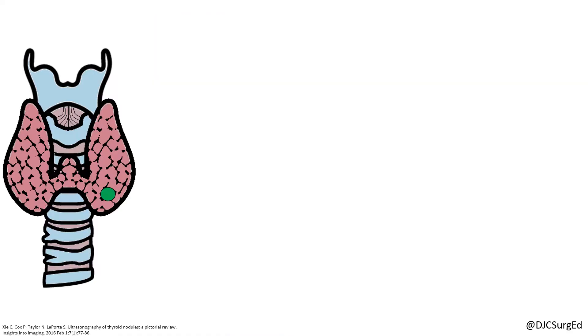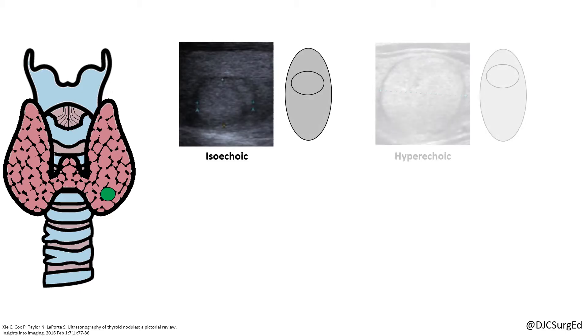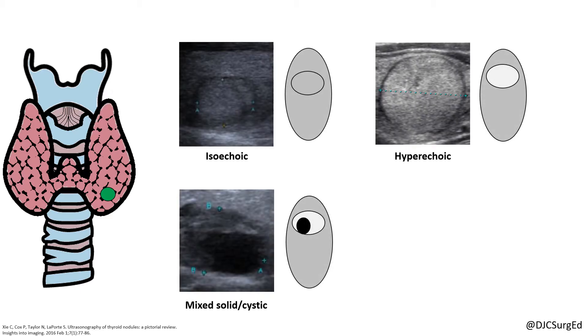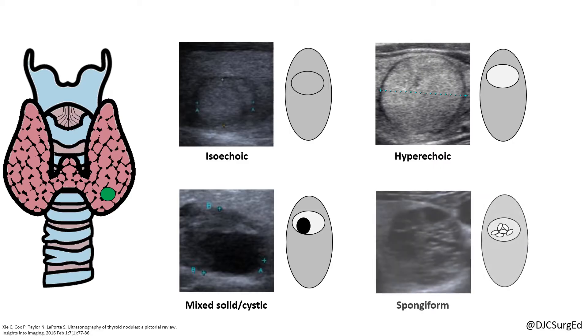Ultrasound features associated with low suspicion of malignancy include isoechoic or hyperechoic solid nodules, mixed solid cystic nodules, or spongiform nodules without the aforementioned suspicious features.